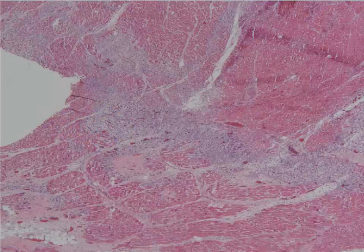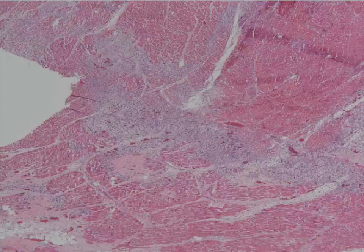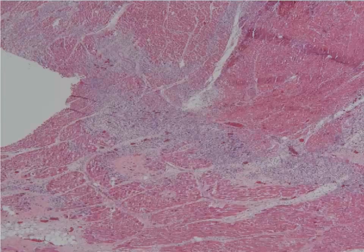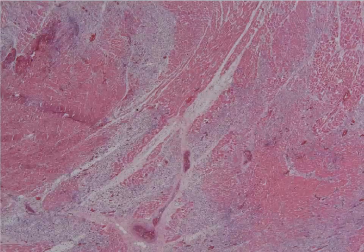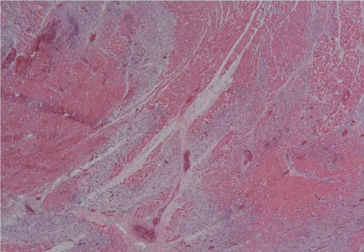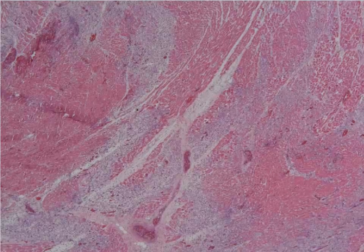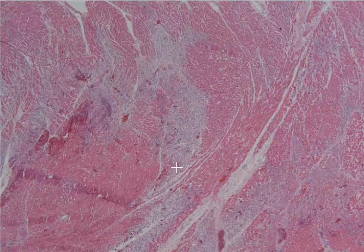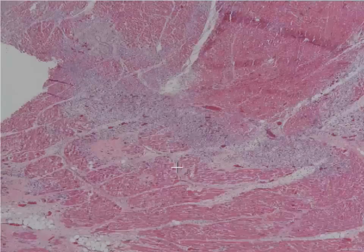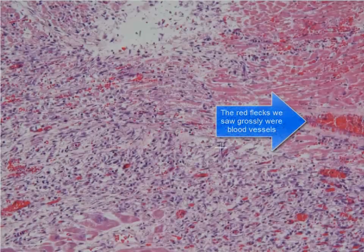His initial heart attack happened about seven days before he passed away, and this is a section of his heart muscle. What we saw grossly was kind of an area that looked yellow to tan - a little bit more tan than anything with little red flecks in it. You can see lots of normal heart muscle here, well somewhat normal, and there are these areas that appear lighter. When we go down and take a closer look at these areas, you will see that this is actually granulation tissue.